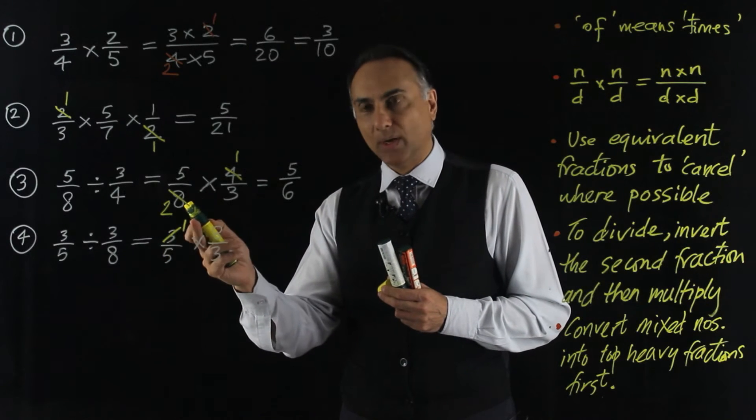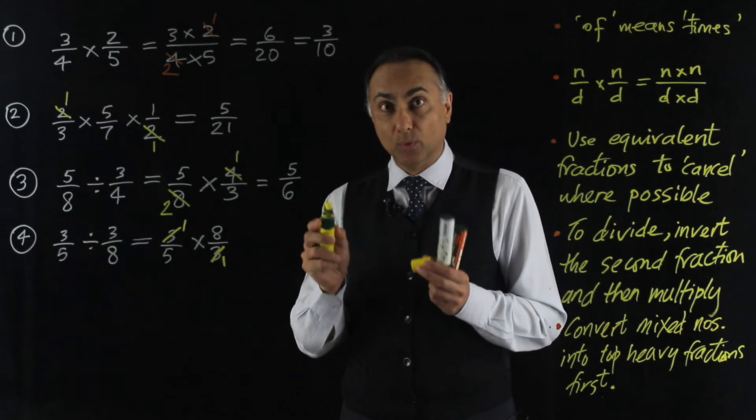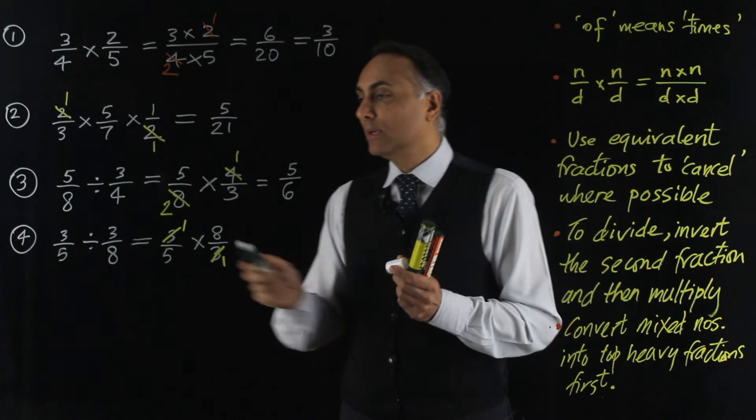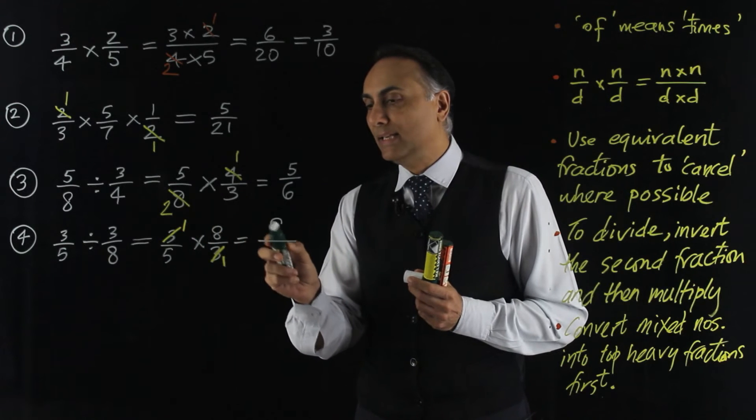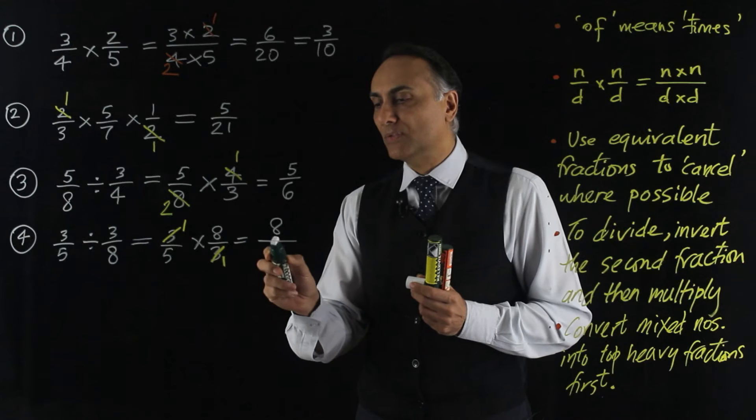so 3 divided by 3 is 1. And 3 divided by 3 on the bottom also reduces that 3 to a 1. And I can't reduce any more, so I now multiply out. So on the top, the numerator, I have 1 times 8, which is 8. And on the bottom, the denominator, I have 5 times 1, which is 5.